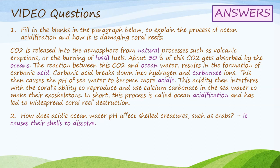Welcome back. Here is the completed paragraph which you can compare with what you have in your notebook. CO2 is released into the atmosphere from natural processes such as volcanic eruptions or the burning of fossil fuels. About 30% of this CO2 gets absorbed by the oceans. The reaction between this CO2 and ocean water results in the formation of carbonic acid. Carbonic acid breaks down into hydrogen and carbonate ions. This then causes the pH of seawater to become more acidic. This acidity then interferes with the corals' ability to reproduce and use calcium carbonate in the seawater to make their exoskeletons. In short, this process is called ocean acidification and has led to widespread coral reef destruction. Question two: how does acidic ocean water pH affect shelled creatures such as crabs? It causes their shells to dissolve.